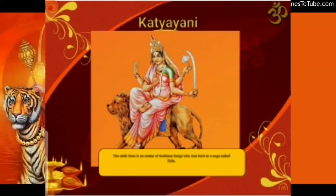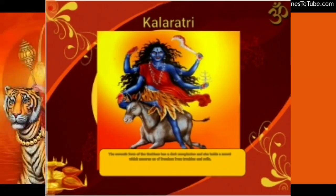The sixth form of Goddess Durga is Katyayani, who is a form of Shakti and is considered the most fierce form of Goddess Parvati.